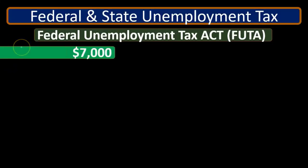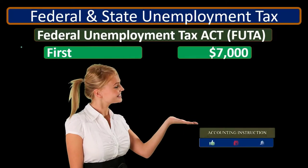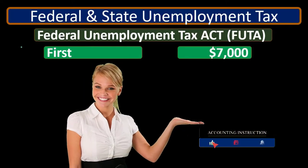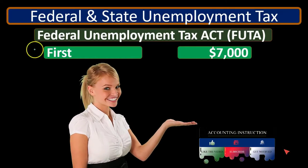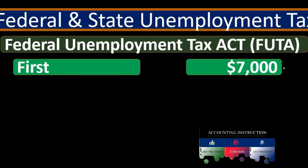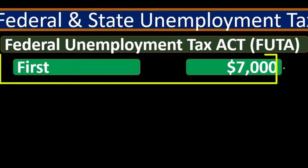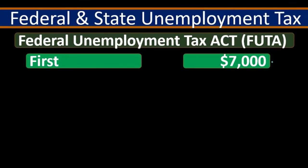The FUTA tax applies to the first $7,000 of wages per employee — this rate could change over time. The employer pays FUTA tax based on the first $7,000 of wages for each employee, meaning that after an employee earns $7,001, no more FUTA tax is owed for that employee.